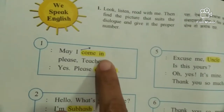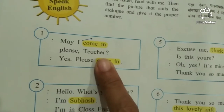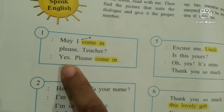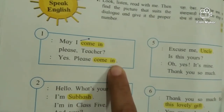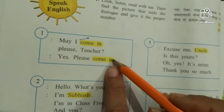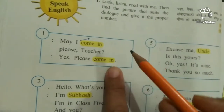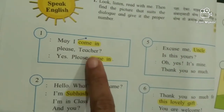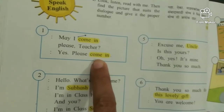May I come in, please, teacher? Yes, please come in. Now, these dialogues, you understood? The child is asking for permission to come in. Teacher and the students are talking.